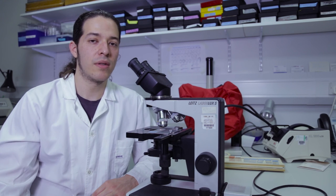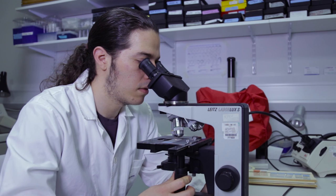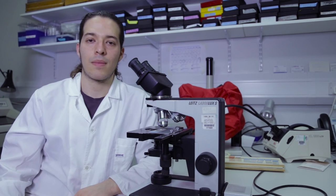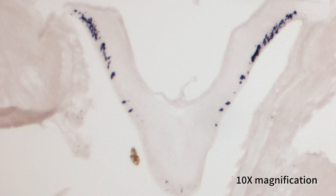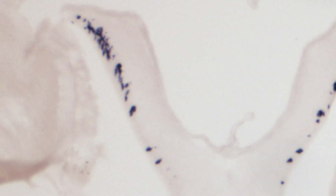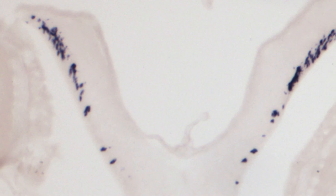Once the slides are mounted, we can view them under the microscope. Here is an image of the staining made earlier. You can see the expression of my target gene in the radial nerve cord of the starfish. Expression is visible as blue staining.